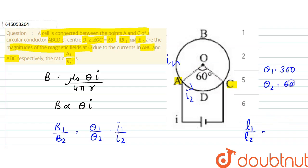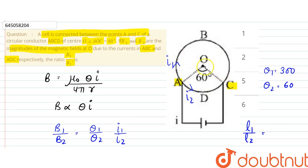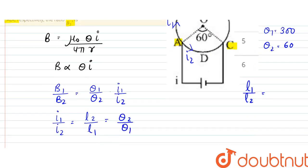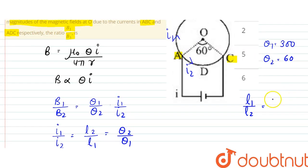So the length 1 would be 2 pi r. So they are directly proportional to that. l1 by l2 is nothing but theta 1 by 360 into 2 pi r, that would be the length, by theta 2 by 360 into 2 pi r.